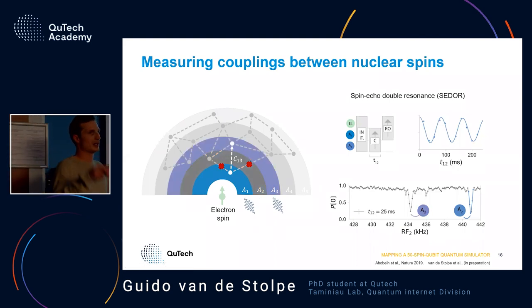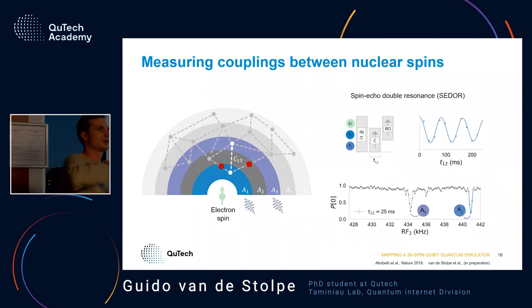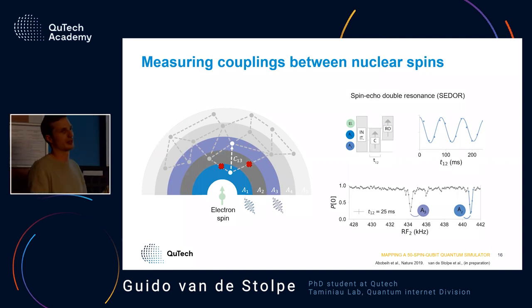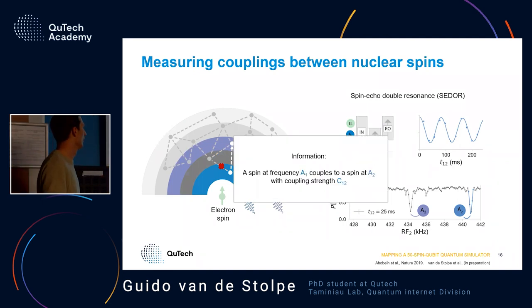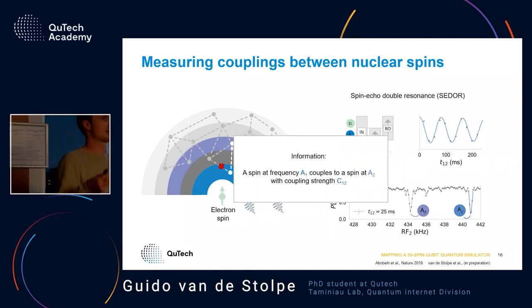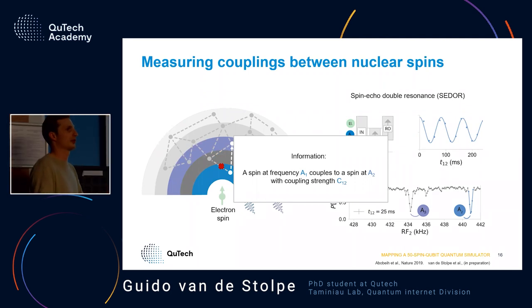In this way we can map out the coupling between A1 and A2, and then between A1 and A3, and this way we can measure all the couplings in that nuclear network. The information we get is: we have a spin at A1 and a spin at A2 and they couple with a certain coupling strength C1.